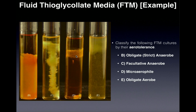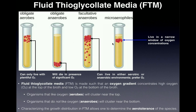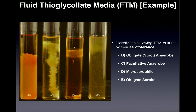Tube D is a microaerophile — you have a band that's a little bit down from the top, occupying a narrow window of oxygen concentration. We don't have growth at the very top, but there's a band still in the aerobic zone, usually toward the bottom of the aerobic zone. Tube E is an obligate aerobe — growth is in the top one-third of the tube only. If you overlapped tubes B and E, the cutoff point separates obligate aerobes above from obligate anaerobes below.